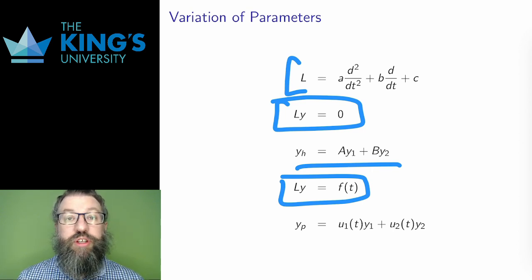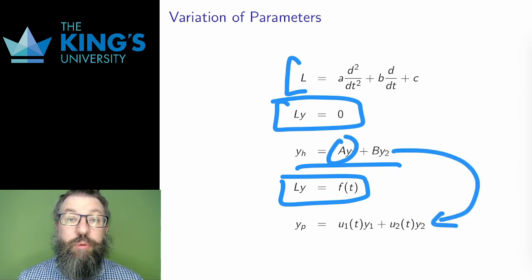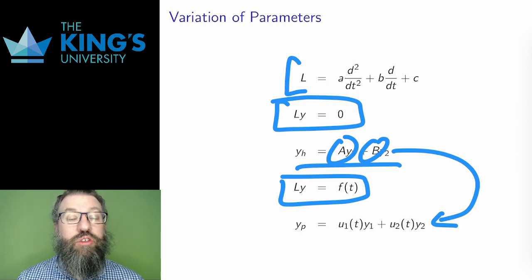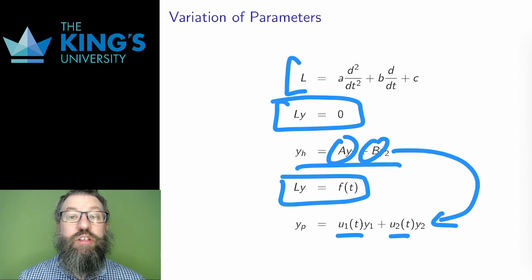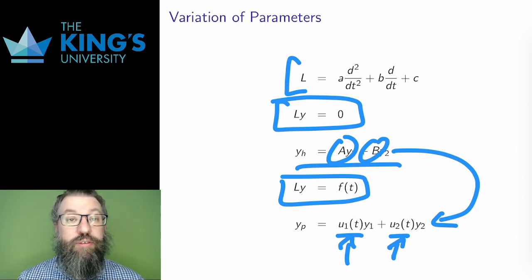Variation of parameters is the more general method. I actually introduced the idea back in first-order equations, and the setup here is similar. I take the homogeneous solutions, which have the constants a and b, the parameters. Then I replace the constants a and b with functions, u1 and u2, to make the particular solution guess. The parameters are now functions, i.e. they have variables. So I have varied the parameters, hence the name.